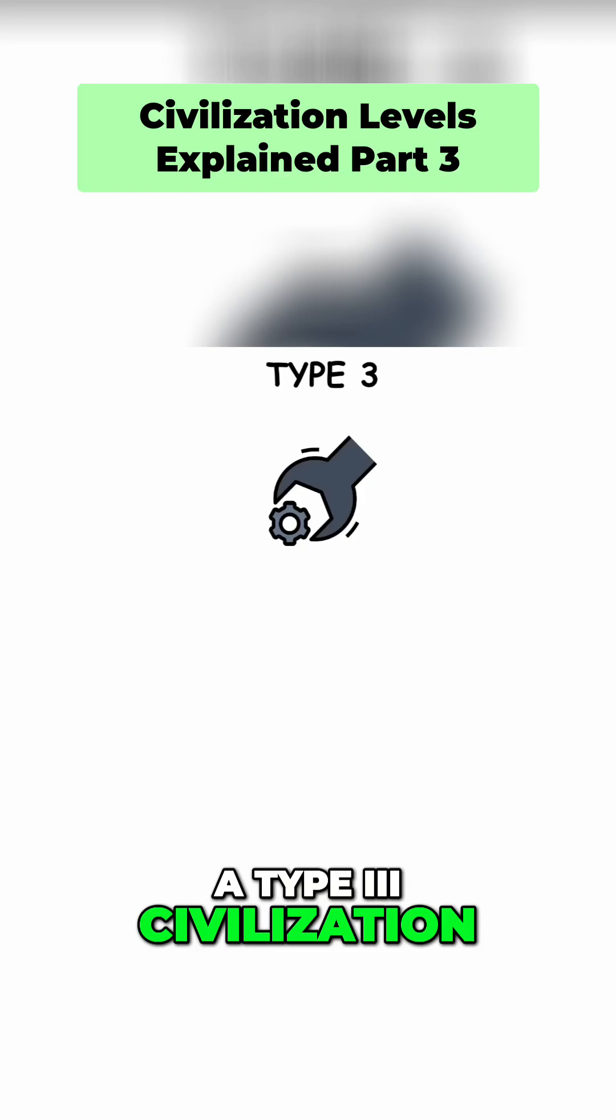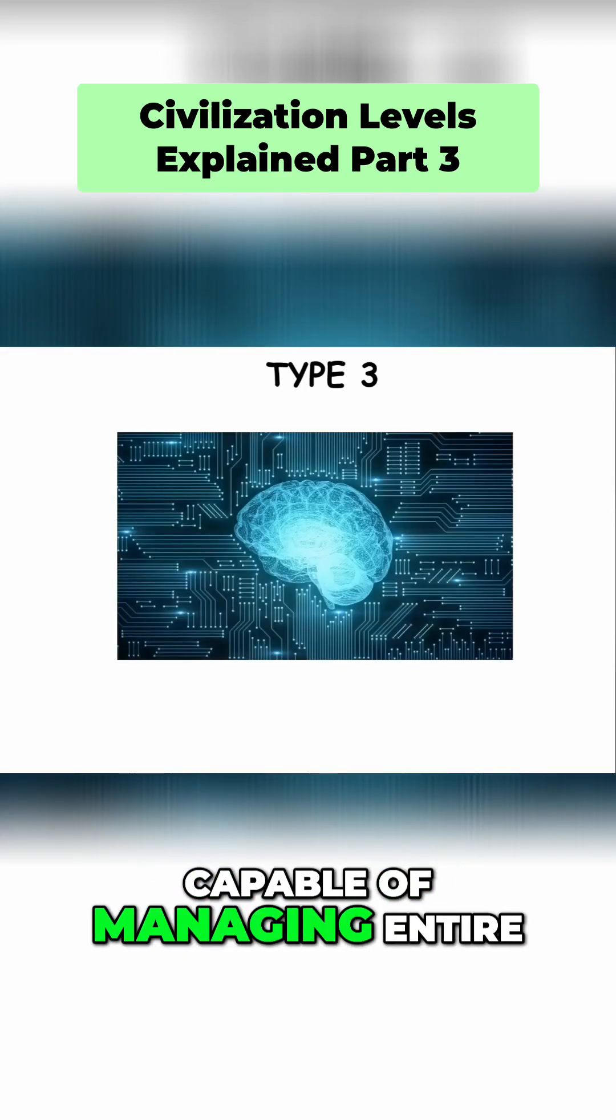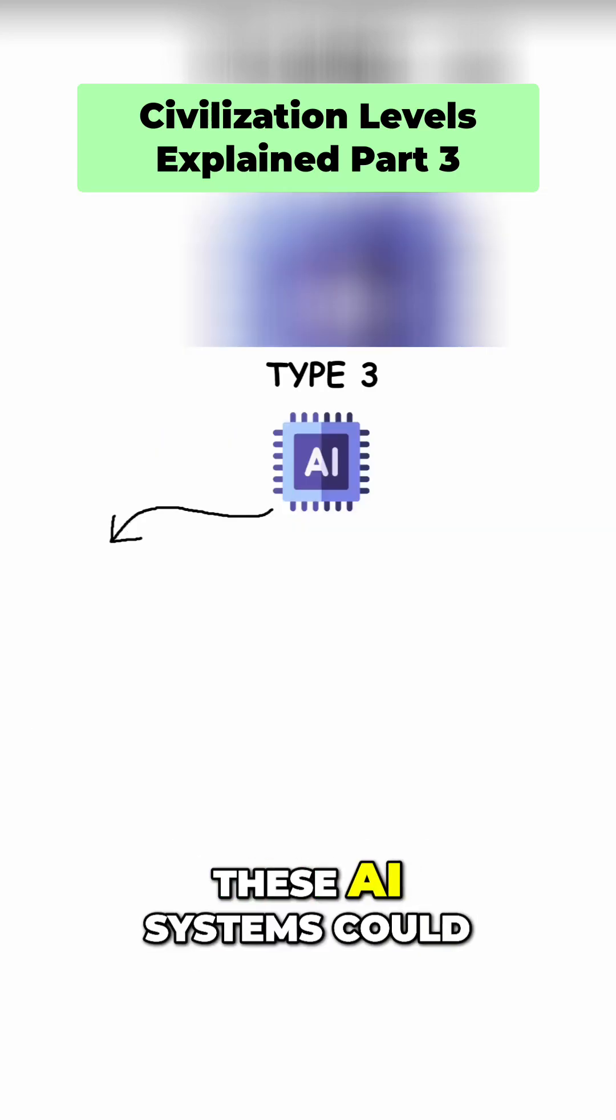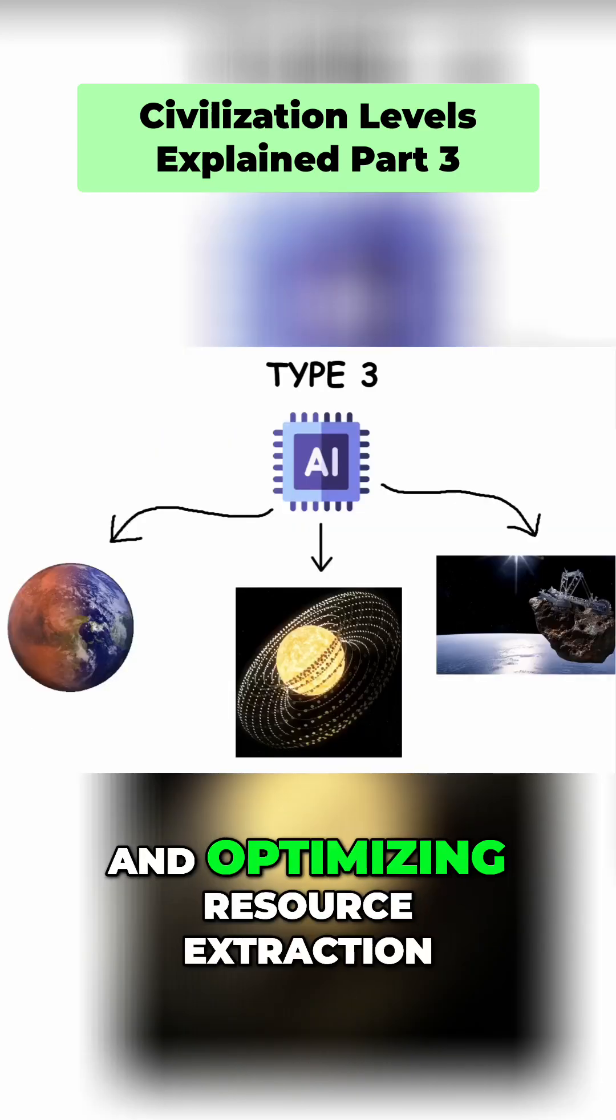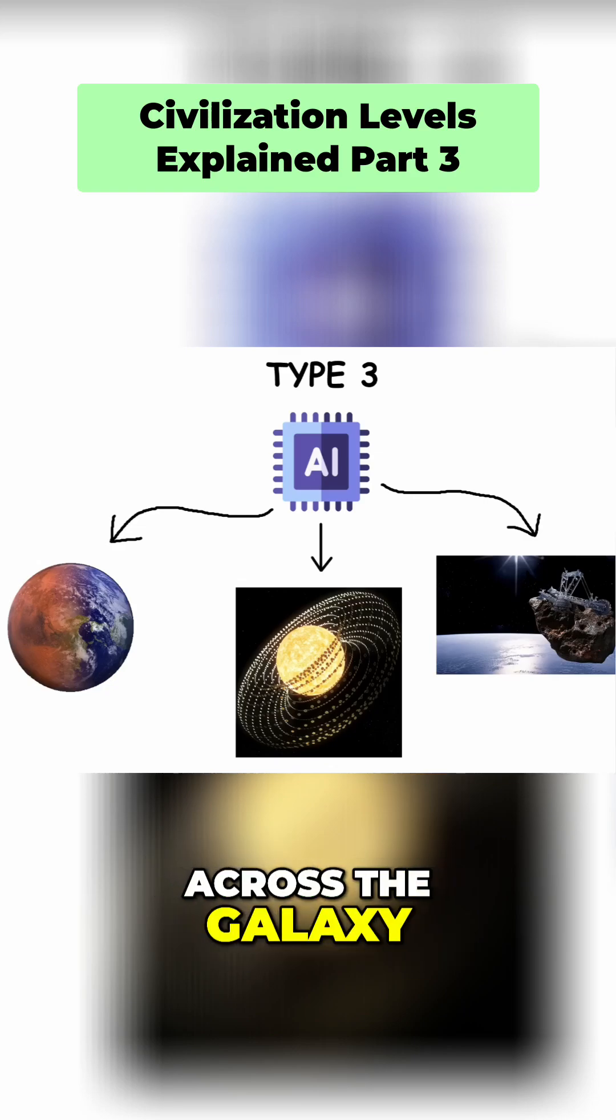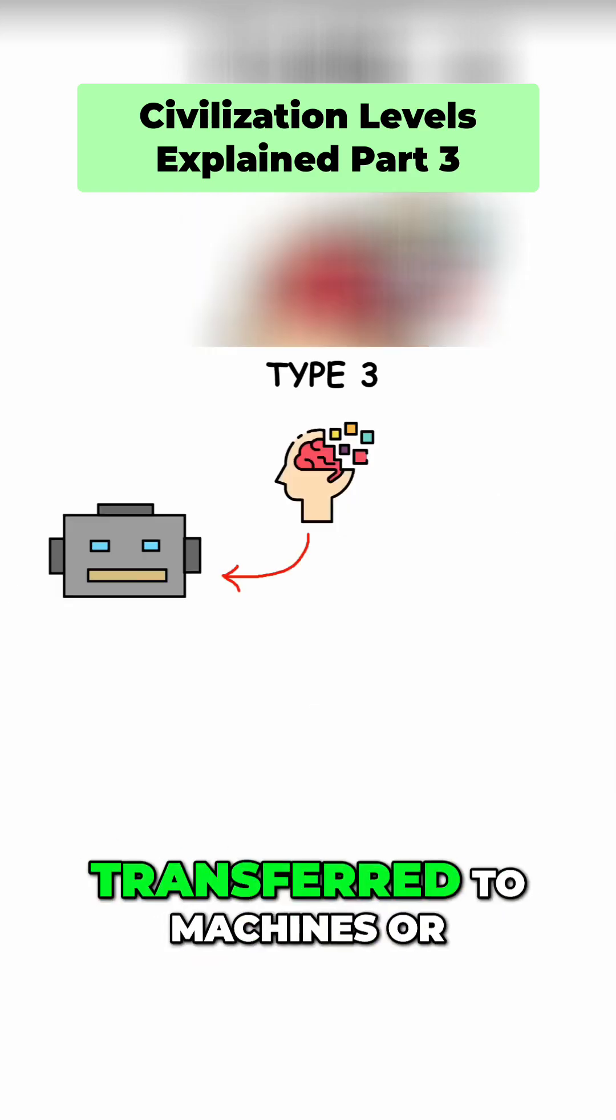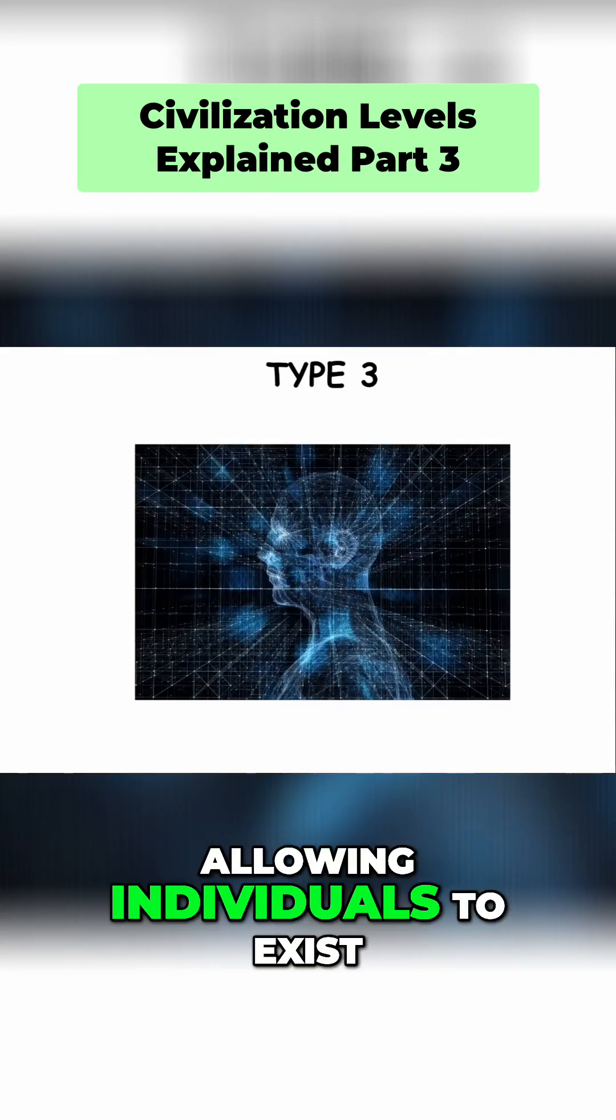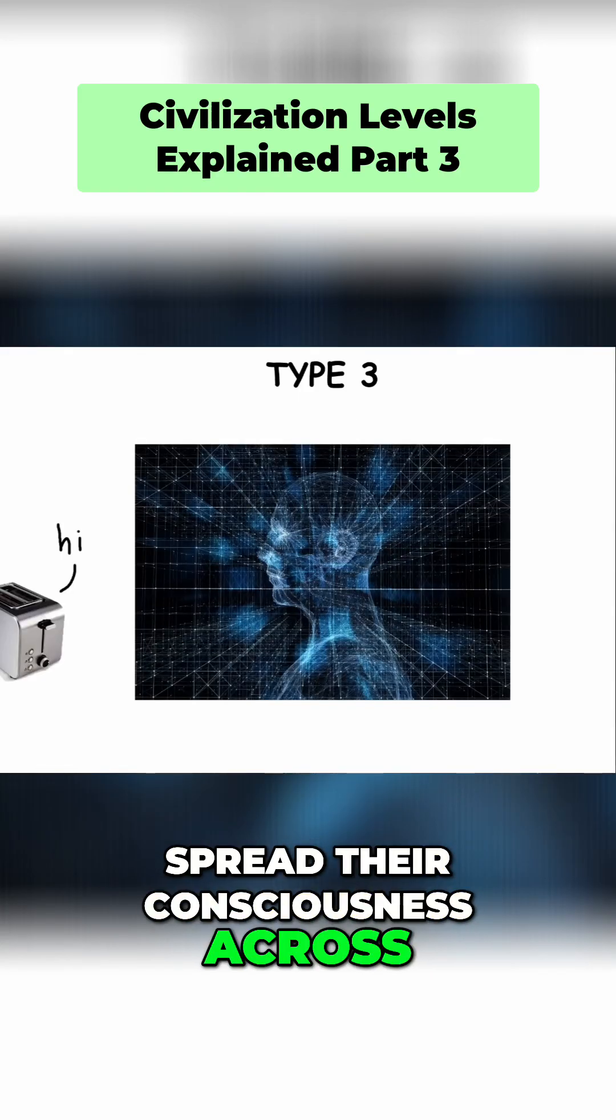A Type 3 civilization would also likely have developed advanced AI systems capable of managing entire star systems or even galaxies. These AI systems could help in terraforming planets, maintaining Dyson swarms, and optimizing resource extraction across the galaxy. Post-biological life might also emerge, where consciousness could be transferred to machines or digital environments, allowing individuals to exist in a wide variety of forms or even spread their consciousness across the galaxy.